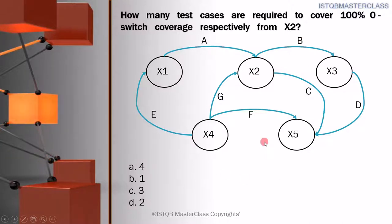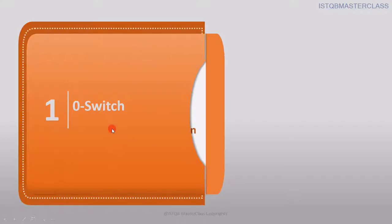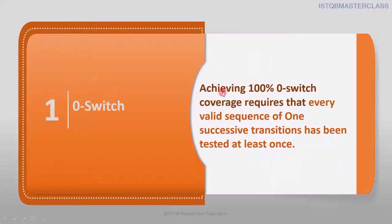Before we proceed further, we need to know the meaning of 100% 0-switch. Let's have a quick revision. Achieving 100% 0-switch coverage requires that every valid sequence of one successive transition has been tested at least once.